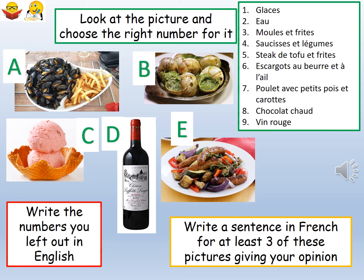Okay, so for your first task, this is a reading and writing task. You can see that you have got five pictures on the board and you need to be looking at the box on the top right, which is a green box with nine types of foods or drinks. Your job for the green task will be to look at A, B, C, D, E and decide if A is number one, two, three, four, five, six, seven, eight or nine.